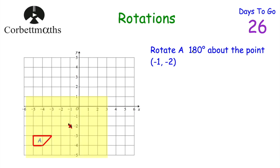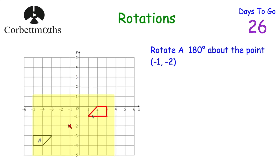We've been asked to rotate 180 degrees. It hasn't specified clockwise or anti-clockwise — that's because it doesn't matter. Rotating 180 degrees clockwise or anti-clockwise lands in the same position. Put your pencil on the centre of rotation and turn the tracing paper 180 degrees: from landscape through portrait (90°) and back to landscape (another 90°). That's where the trapezium moves to. Draw that shape, and we've rotated A 180 degrees about the point (-1, -2).